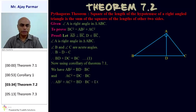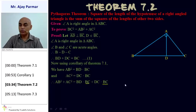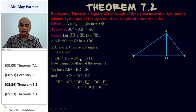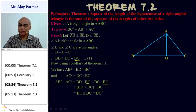Adding both results: AB² + AC² = BD × BC + DC × BC. Since BC is common from both terms, this gives (BD + DC) × BC. But we know that BD + DC = BC, so this becomes BC × BC = BC². Therefore, AB² + AC² = BC², which proves Pythagoras theorem.